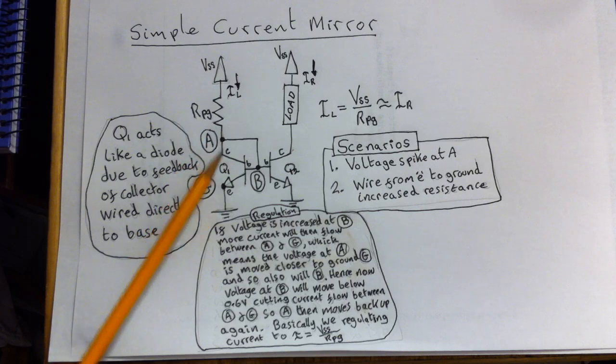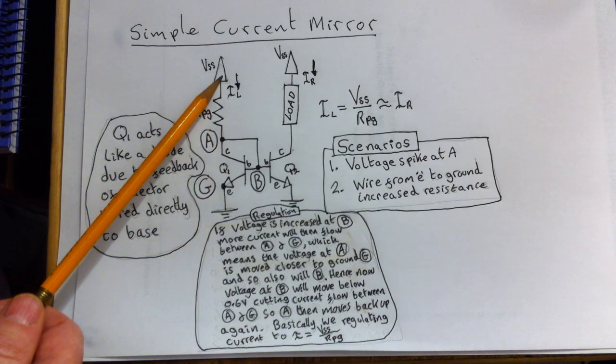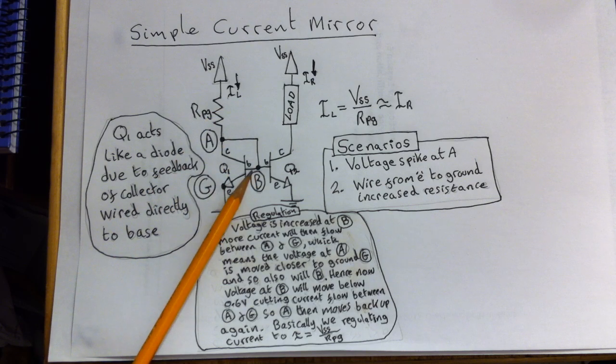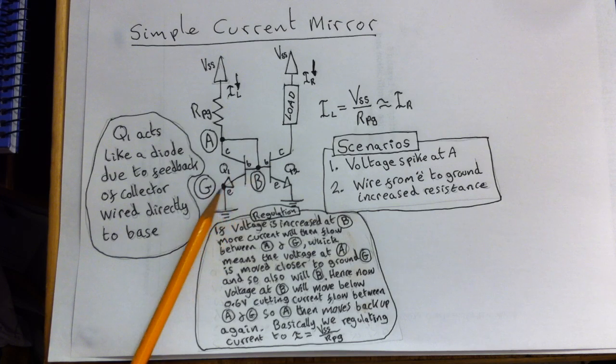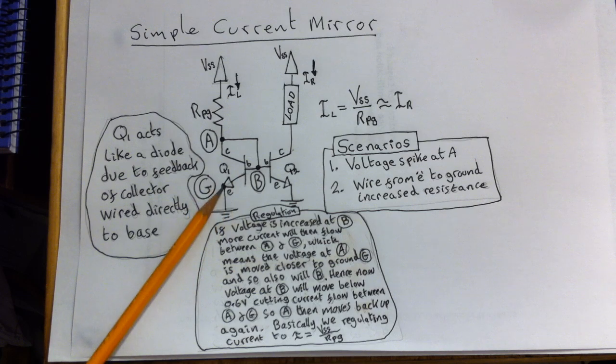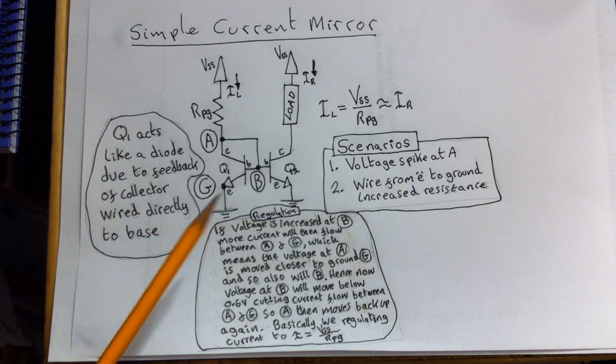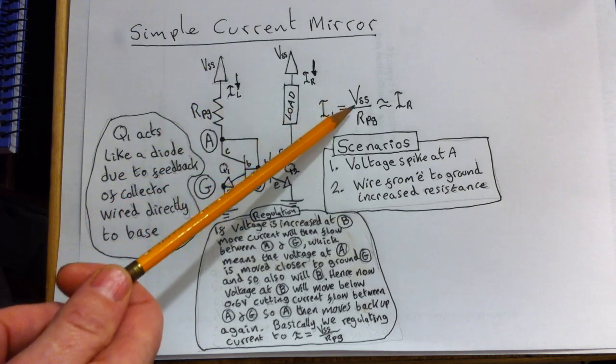Which means that A now is driven higher towards the source voltage, which then implies that B will be driven higher, therefore will increase this, so it will actually then negate the actual drop by increasing now to compensate for this higher resistance. So you can see that the feedback is actually regulating this whole circuit. And if you can see that, you can see that that's a very neat thing, because it means that no matter what's happening here with heat and kind of spikes or resistance changes, this current is always going to be fixed to VSS over RPG.